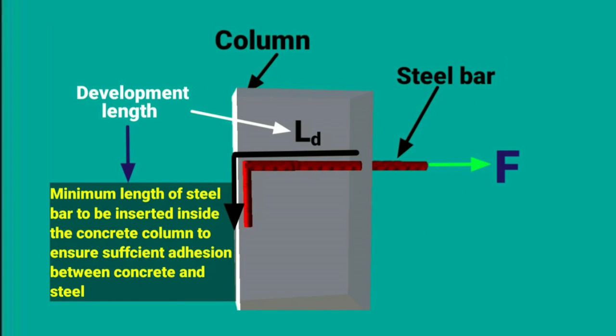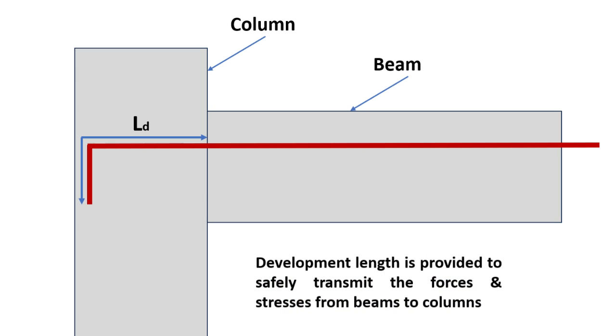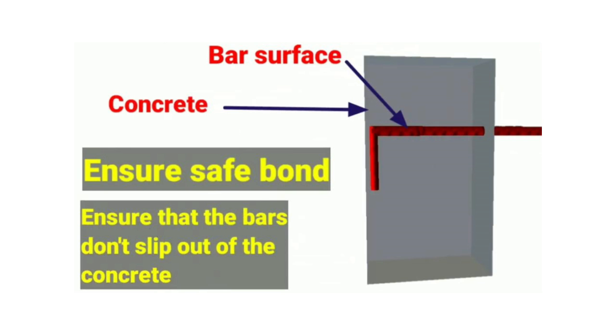Now, why do we bother with providing development length? It minimizes the risk of the rebar coming loose from the concrete column. It ensures the safe transmission of forces or stresses from beams to columns. And most importantly, it guarantees a secure bond between the rebar surface and concrete, preventing those bars from slipping out.